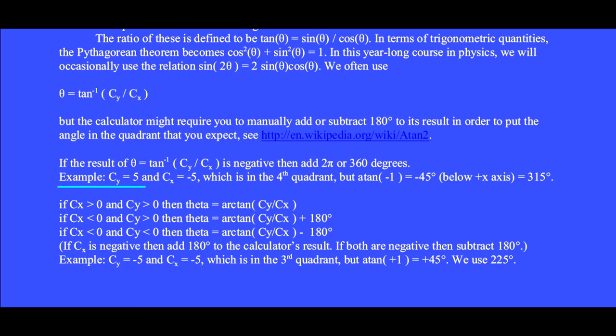For example, if c_y = 5 and c_x = -5, which is in the fourth quadrant, but arctan(-1) = -45° (below the +x axis), so we adjust the result to θ = 315°.